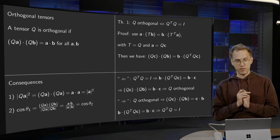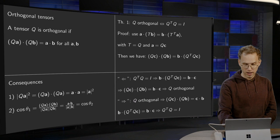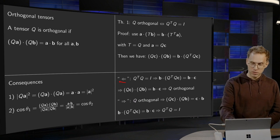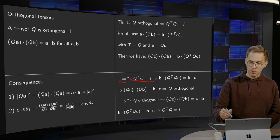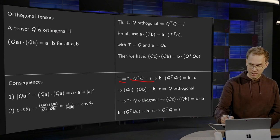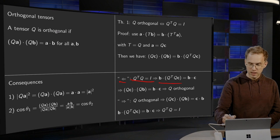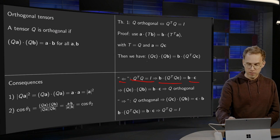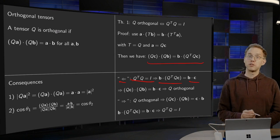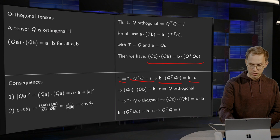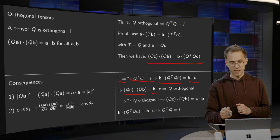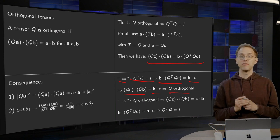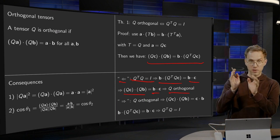Now we can prove the theorem, first from right to left. If Q^T Q is identity, plug it in. Then b·(Q^T Qc) is just b·c. Using the expression we already had, (Qc)·(Qb) = b·c, which is exactly the definition of orthogonality for Q. That's right to left.